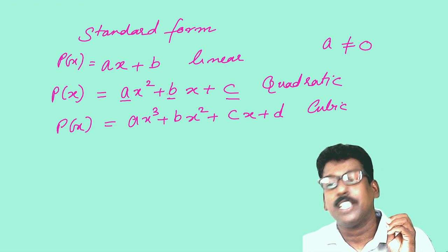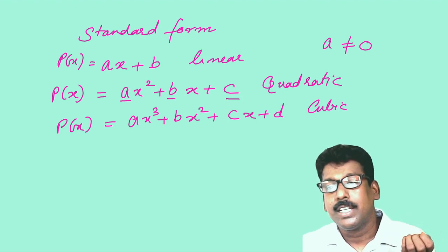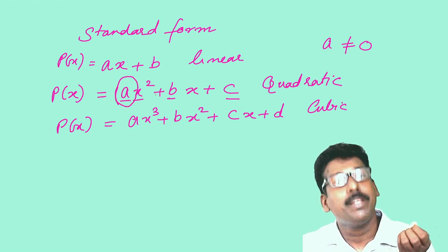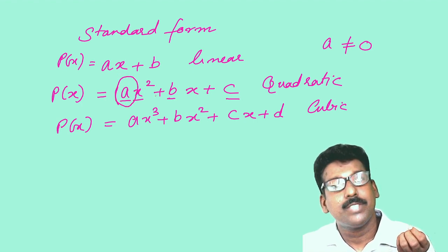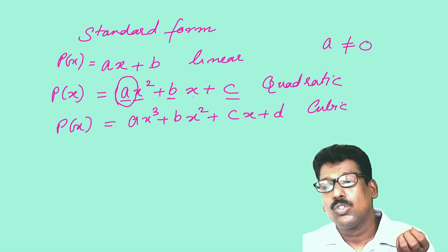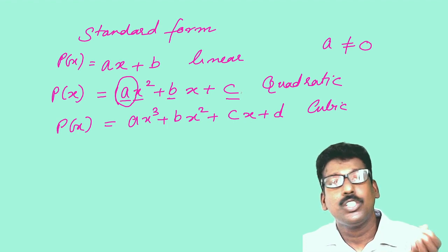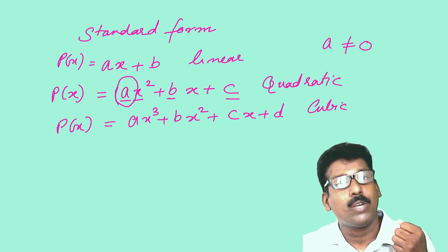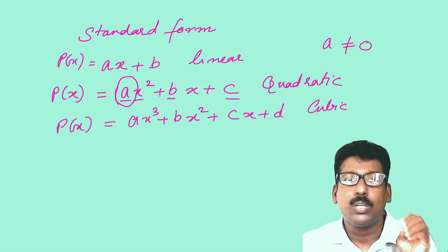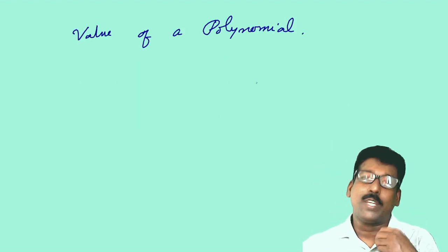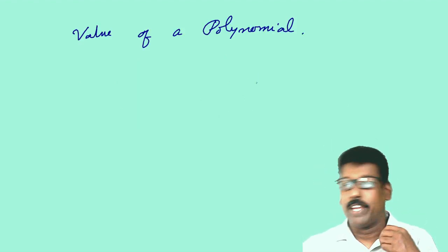In all cases, a must not equal 0. If a equals 0 in ax² + bx + c, the x² term becomes 0 and the expression reduces to bx + c, which is no longer a quadratic polynomial. So the condition a ≠ 0 is essential.